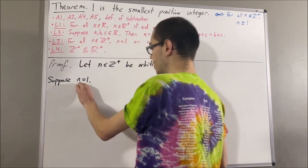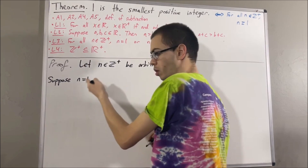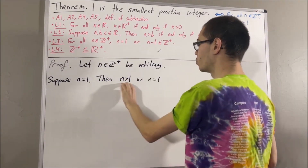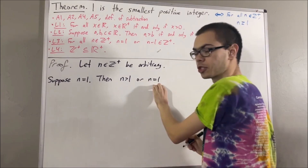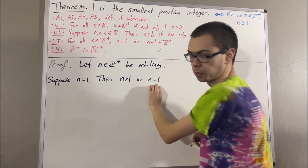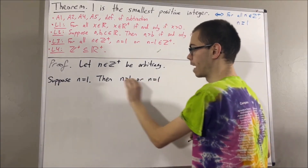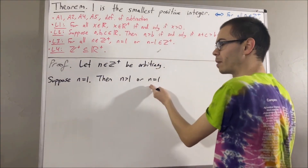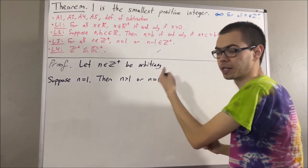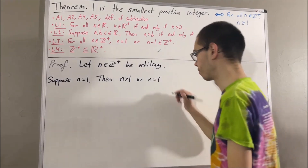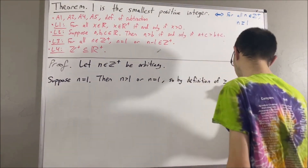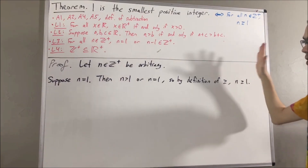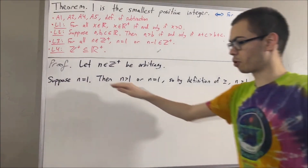Let's start with the case where n is equal to one. If n is equal to one, then n is greater than one or n is equal to one. This statement is true because at least one of its disjuncts is true — namely, n is equal to one. But this is precisely what it means by definition for n to be greater than or equal to one, which is exactly what we wanted to show. This completes the case where n is equal to one.